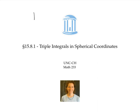The previous video introduced spherical coordinates: the numbers rho, theta, and phi that can be used to describe a point in space. Recall that rho represents the distance from the point to the origin, theta represents the angle between the positive x-axis and the projection of this line segment onto the xy plane, and phi represents the angle between the positive z-axis and the line from the origin to the point.